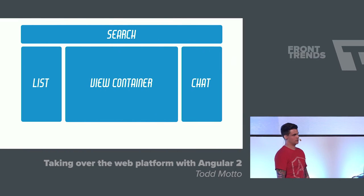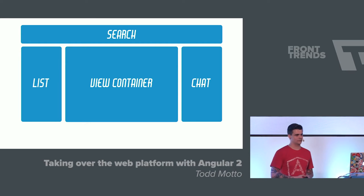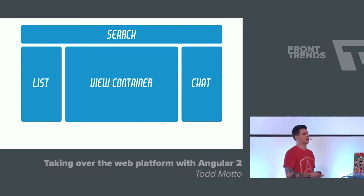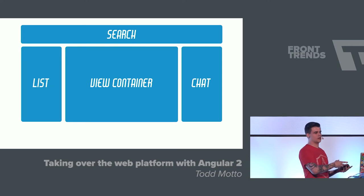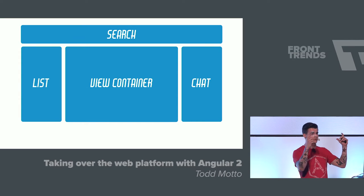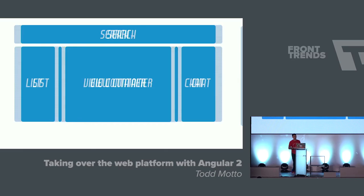So if you imagine this is Gmail — component architecture in this kind of diagram — we have a search, a list, and then a chat. We could have a chat component with more components inside, a list on the other side for create a new message, inbox, drafts, spam, and at the top a search component. Then we have a view container — in web applications, a view is where we can dynamically change content. So if you click on an email, it destroys that middle container but keeps the outside consistent. We can swap things in and out and change the URL and templates accordingly.